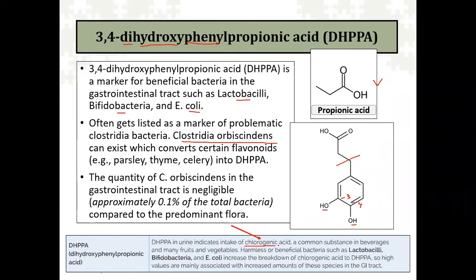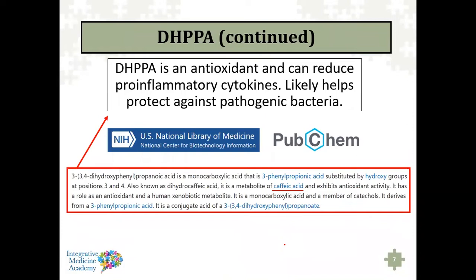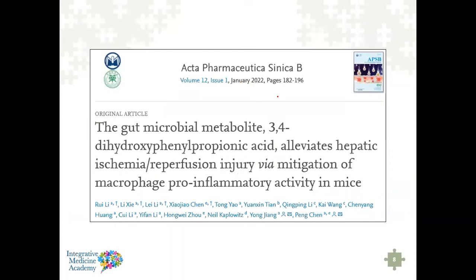There is a chemical called chlorogenic acid which we'll come back to shortly. There's actually a lot of upside to DHPPA. From PubMed and the NIH, it turns out that DHPPA is an antioxidant, can help reduce pro-inflammatory cytokines, and likely also helps protect against various pathogenic bacteria. In a mouse study looking at 3,4-dihydroxyphenylpropionic acid, it was found to mitigate hepatic injury from ischemia by reducing macrophage-driven pro-inflammatory cytokine production.